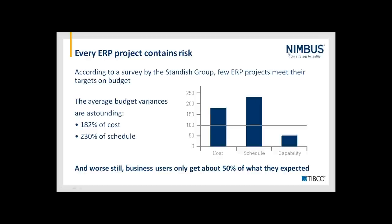We found a group who specialize in looking at ERP projects and potential success and failure reasons. They carried out a survey and found some quite surprising results. On average, 182% of ERP projects ran over cost, and the time taken to deliver those ERP projects ran over by 230%. So they were costing twice as much to deliver and taking twice as long as expected. And the worst thing was, not only was it costing more and taking more time, but the business customers were getting much less than they expected from the new ERP implementation.